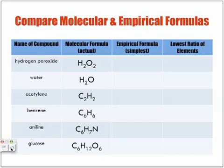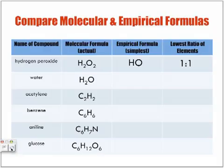Let's compare molecular and empirical formulas. For the first example, the molecular formula has subscripts that we can divide by two, so we get HO — the ratio is one to one. For H2O, can we divide the subscripts by anything to simplify further? No. So the molecular formula is also equal to the empirical formula, and the ratio between hydrogen and oxygen is two to one.